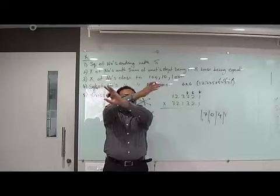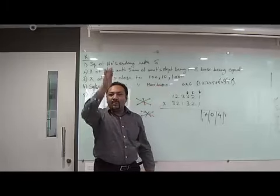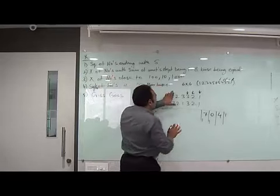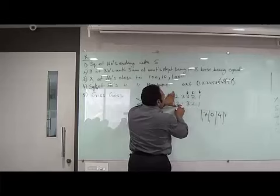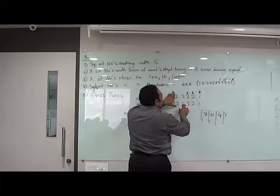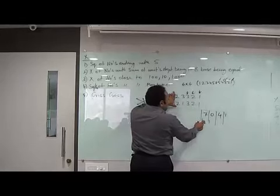Extreme cross, next extreme cross. 2 ones are 2, plus 2, 4, plus 6, 10, plus 2, 12, plus 9, 21, plus 1, 22.